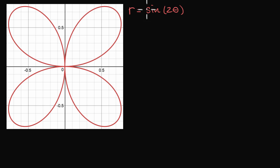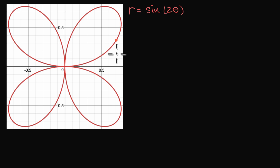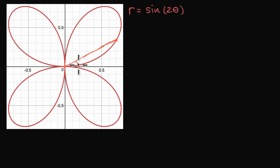For any point here, we could obviously specify these points in terms of x and y coordinates, but we could also specify them in terms of an angle and a radius. So for example, this would have some x coordinate and some y coordinate, or we could draw a line from the origin to that point and specify it with some angle theta and some r, which is the distance from the origin to that point.